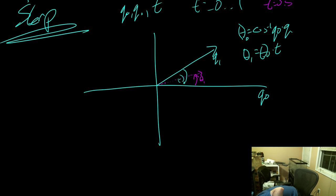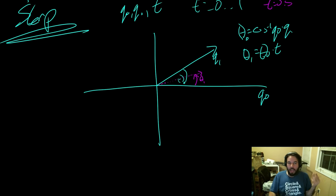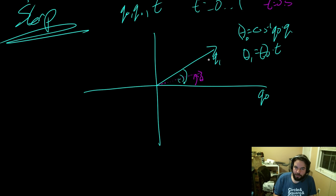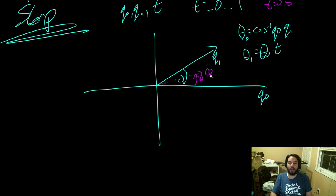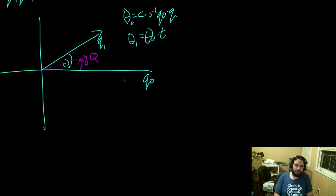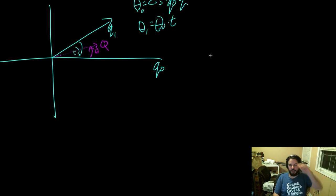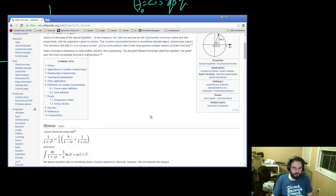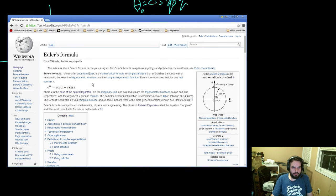All we want to do is find the output quaternion. We have q0 and q1, and we can figure out what theta we want. How do we do that? This is standard linear algebra — kind of related to Euler's formula. If you look up Euler's formula you get that little formula. We want two basis vectors with which we can define a number on the plane.